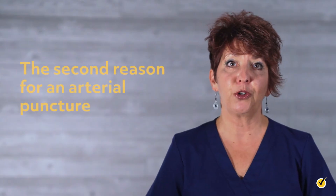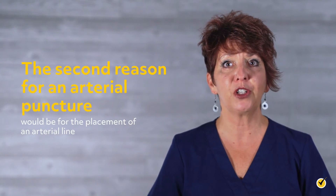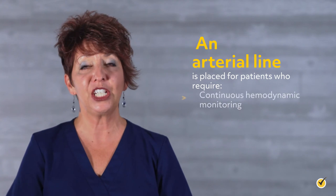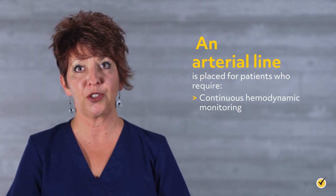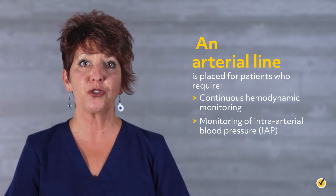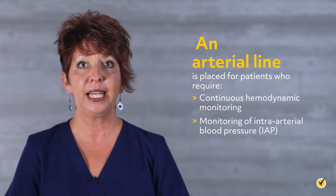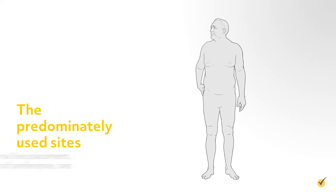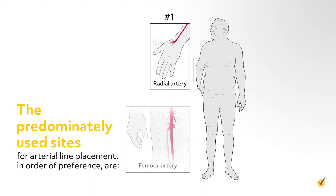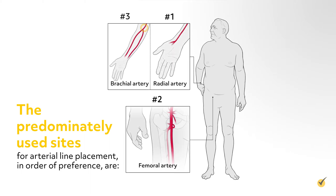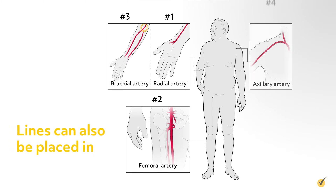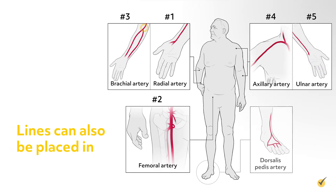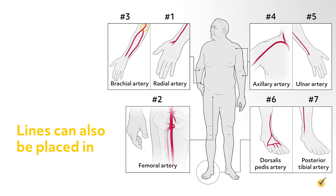The second reason for an arterial puncture would be for the placement of an arterial line. An arterial line is placed for patients who require continuous hemodynamic monitoring or monitoring of intra-arterial blood pressure (IAP) and titration of vasoactive medications. The predominantly used sites for arterial line placement in order of preference are the radial, femoral, and brachial arteries, though lines can also be placed in the axillary, ulnar, dorsalis pedis, and posterior tibial arteries.